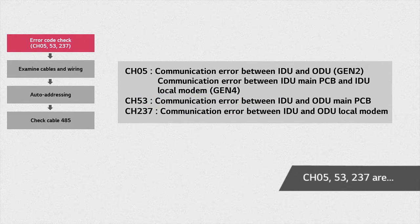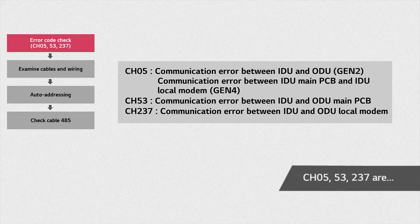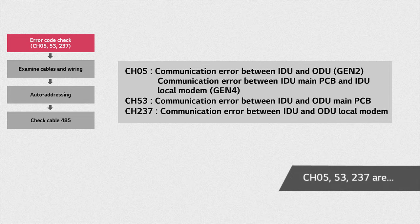We'll take a look at error codes CH05, 237, and 53, which are all related to communication between the indoor and outdoor unit.